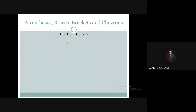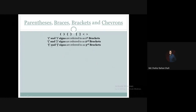We will see these symbols. In terms of mathematics, we are all familiar with these symbols and they have particular names: first brackets, second brackets, third brackets, less than sign and greater than sign. But in programming and coding, from the perspective of computer science, they are known with different terms.